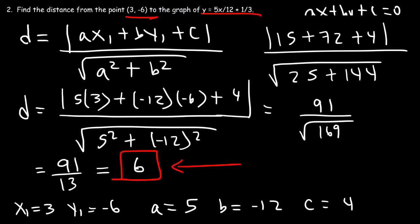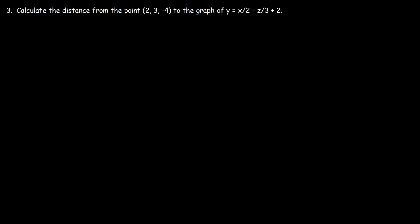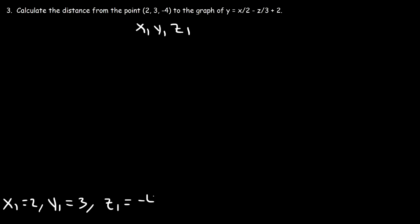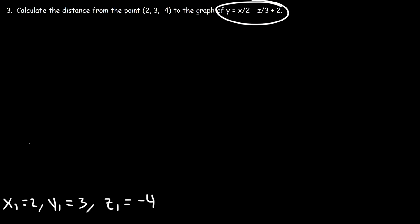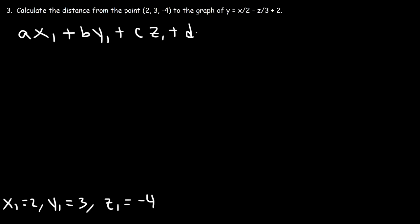So now you know how to calculate the distance between a point and a line in two dimensions. Number 3: calculate the distance from the point 2, 3, negative 4 to the graph of y is equal to half of x minus 1 third z plus 2. So this is x1, y1, and z1 — x1 is 2, y1 is 3, and z1 is negative 4. We have three dimensions in this problem. The formula we want to get the equation into is ax1 plus by1 plus cz1 plus d is equal to 0.